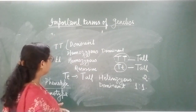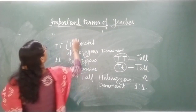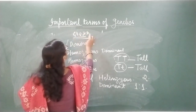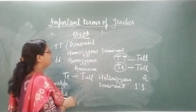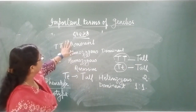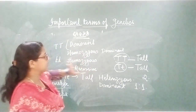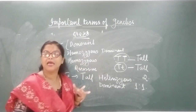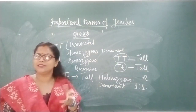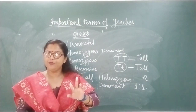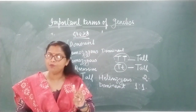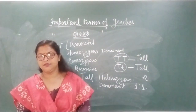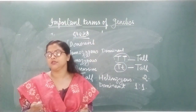Now we need to know what we mean by crossing. Crossing means when reproduction takes place between two plants or two organisms — this is known as crossing.